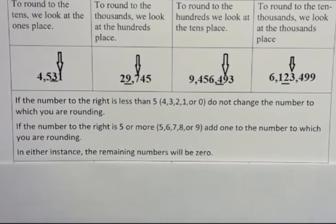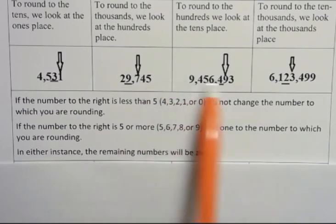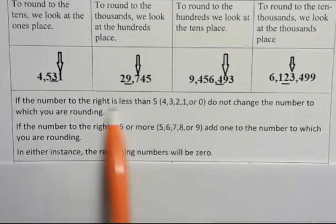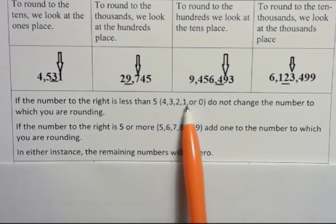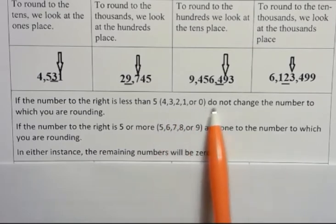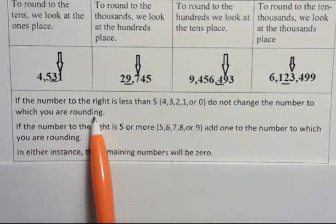Here's how we decide if we're going to round. If the number to the right, we're looking at the numbers where the arrows are, if that number to the right is less than 5, that is if it's 4, 3, 2, 1, or 0, do not change the number to which you are rounding.